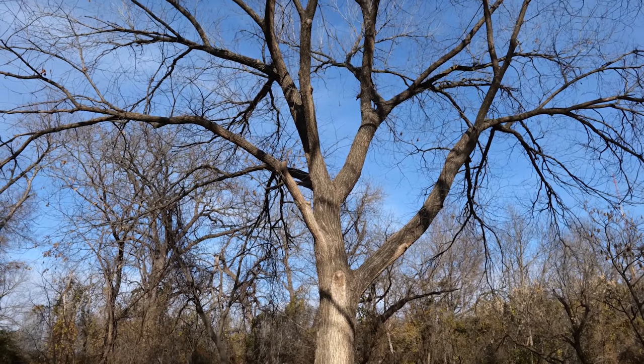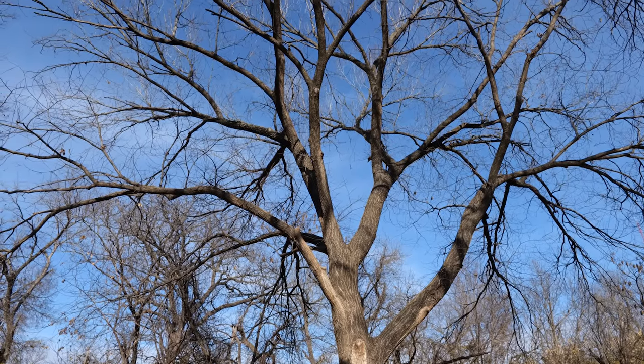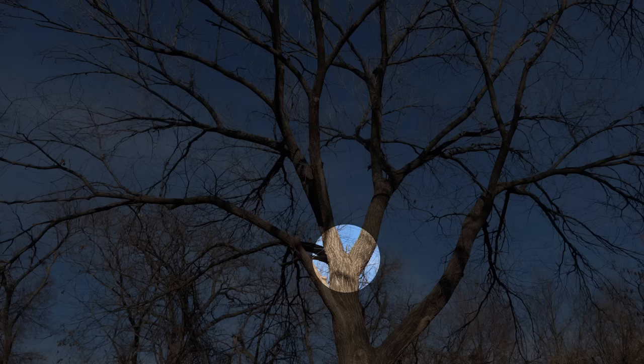Trees are fractal. Different parts of a tree often look very similar even though they're at different scales. This branching point here is big, this branching point here is small, but they look more or less the same as each other.